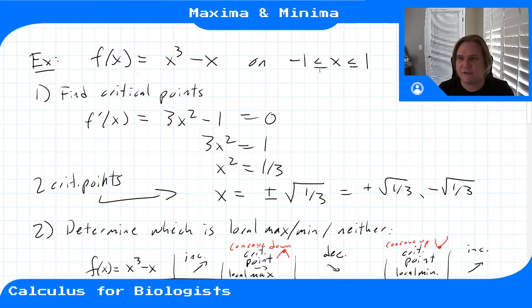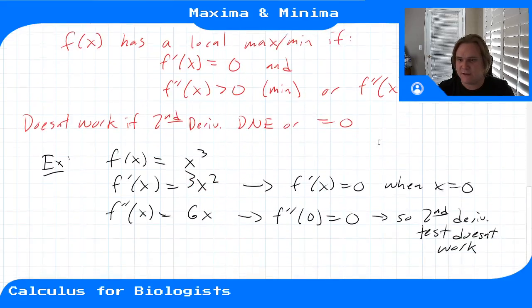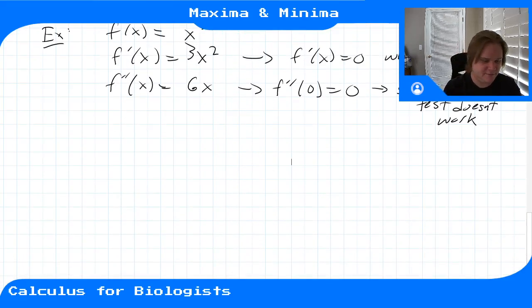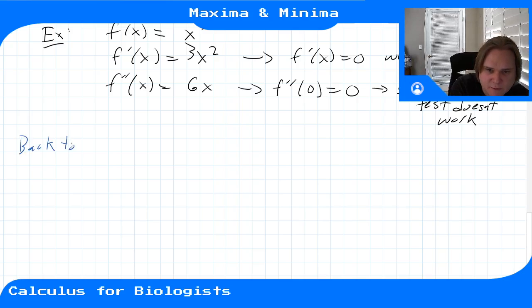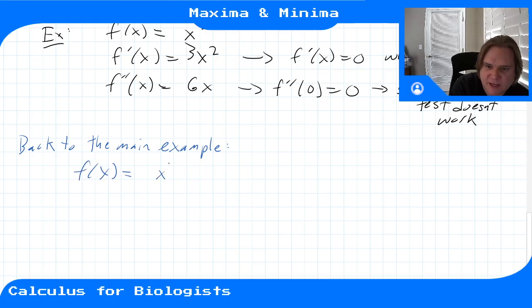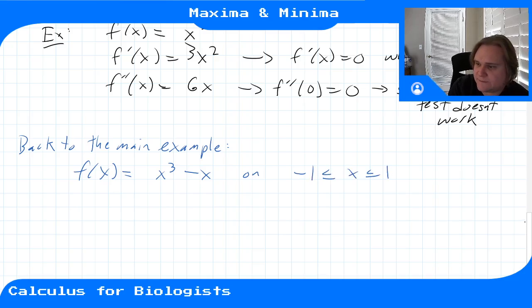Back to the main example: f(x) = x³ - x on the interval [-1, 1]. We confirmed a local maximum at x = -√(1/3).